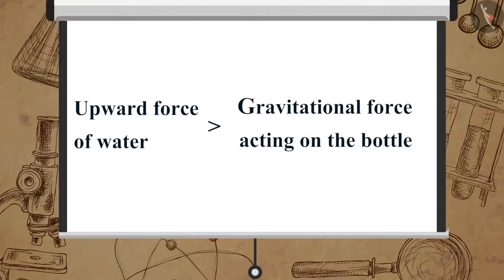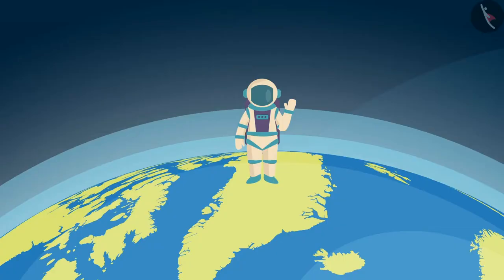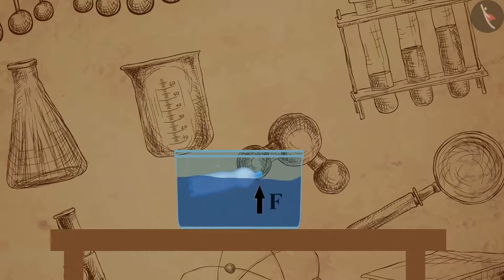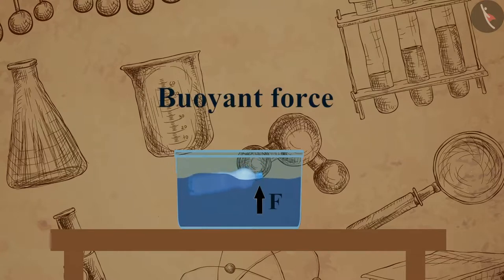We have learned that the weight of an object is the gravitational force acting on the object. Thus we can say the upward force exerted by the water on the bottle is more than its weight. This upward force is called buoyant force or upthrust, and this property is known as buoyancy.